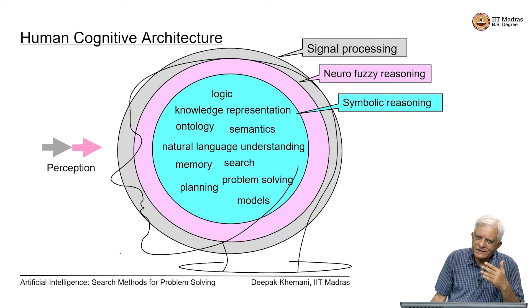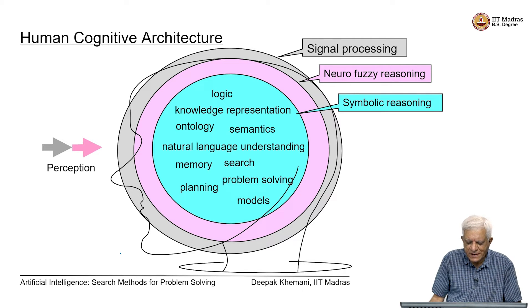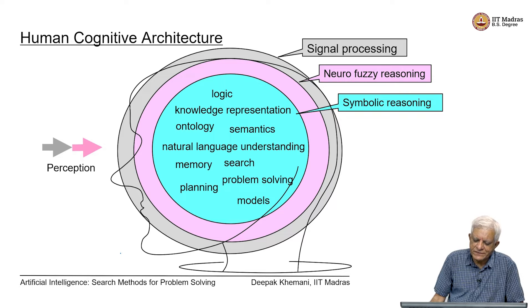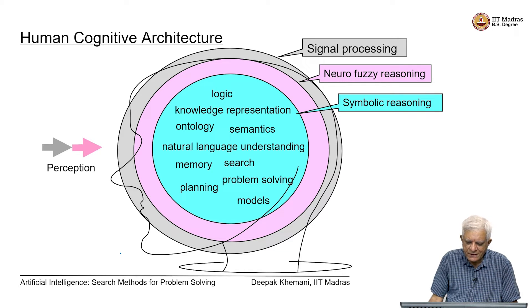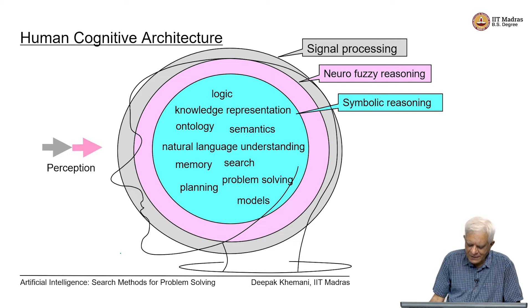We want to look at the way human beings do cognition, thinking, and intelligent activity. The kind of things in this larger circle — logic, representation, planning, reasoning, search, and so forth. For humans, symbolic reasoning is the major part of the cognitive load that we have essentially.